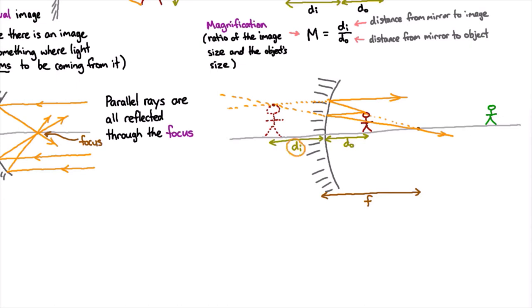Figure out exactly how far away the image should be if you know the distance of the object and the focal length. If you know those two distances, then you also know the magnification.